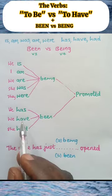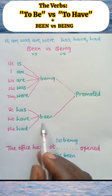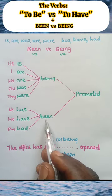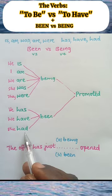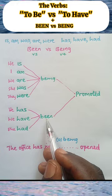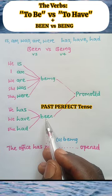Now, has and have, together with been, forms present perfect tense. Whereas had plus been forms past perfect tense.